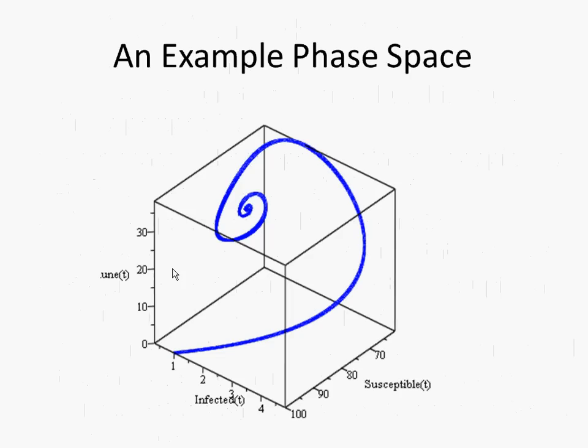In this space we might have susceptibles along one coordinate, infectives along another, and recovereds along a third. A system at a given point in time will be at one point in this space with certain values for each variable. Over time, it will undertake a trajectory. That trajectory will be dictated by the governing state equations. Often it will approach some equilibrium — a fixed point. Occasionally it will approach a limit cycle, cycling around like a planet around a star. Very commonly, it will approach a fixed point where nothing is changing anymore — everything is in balance.